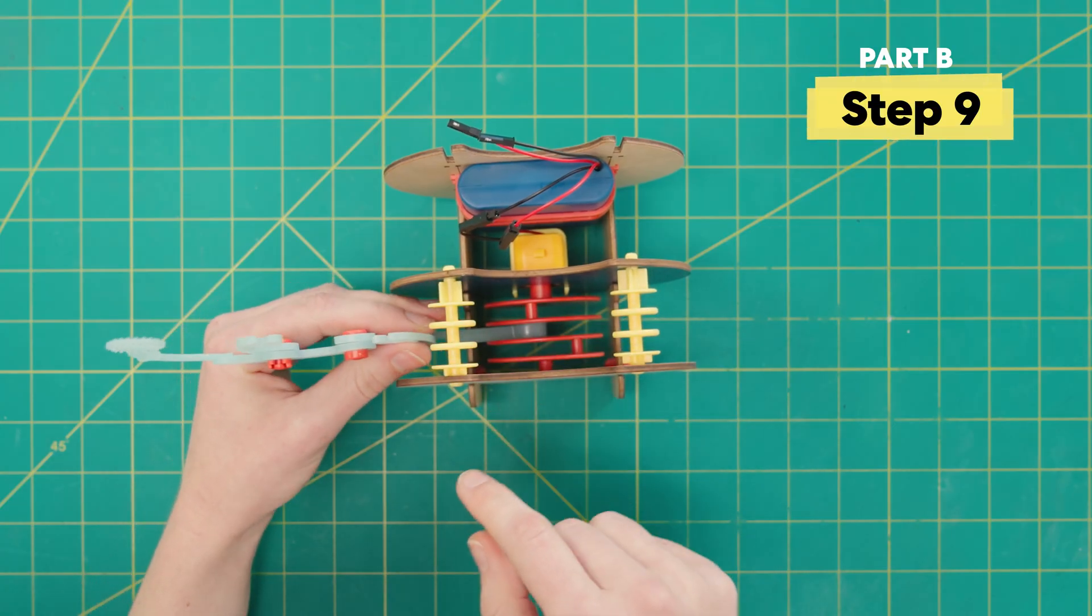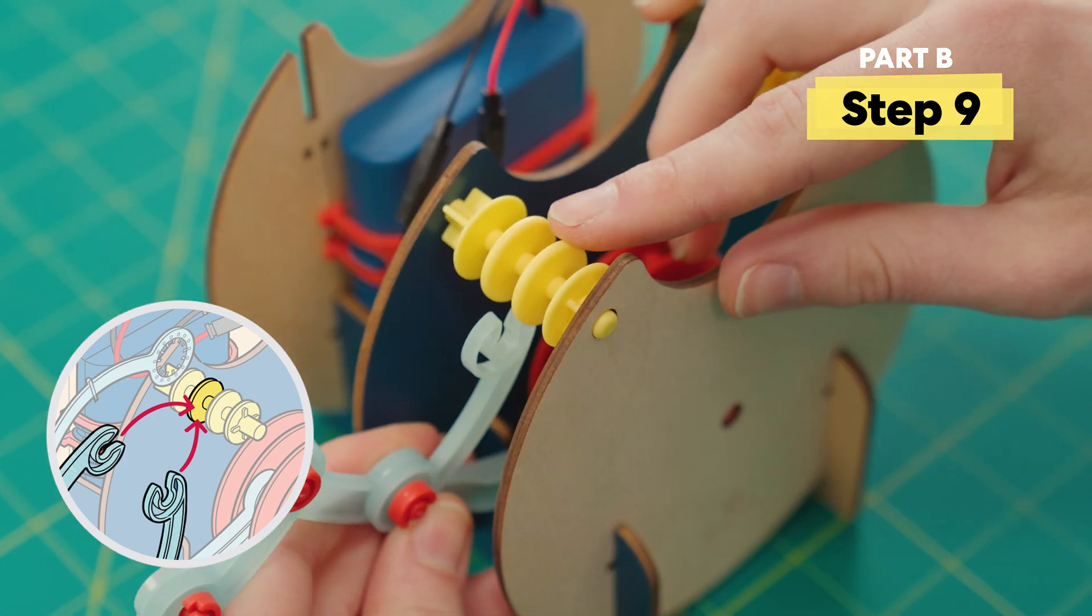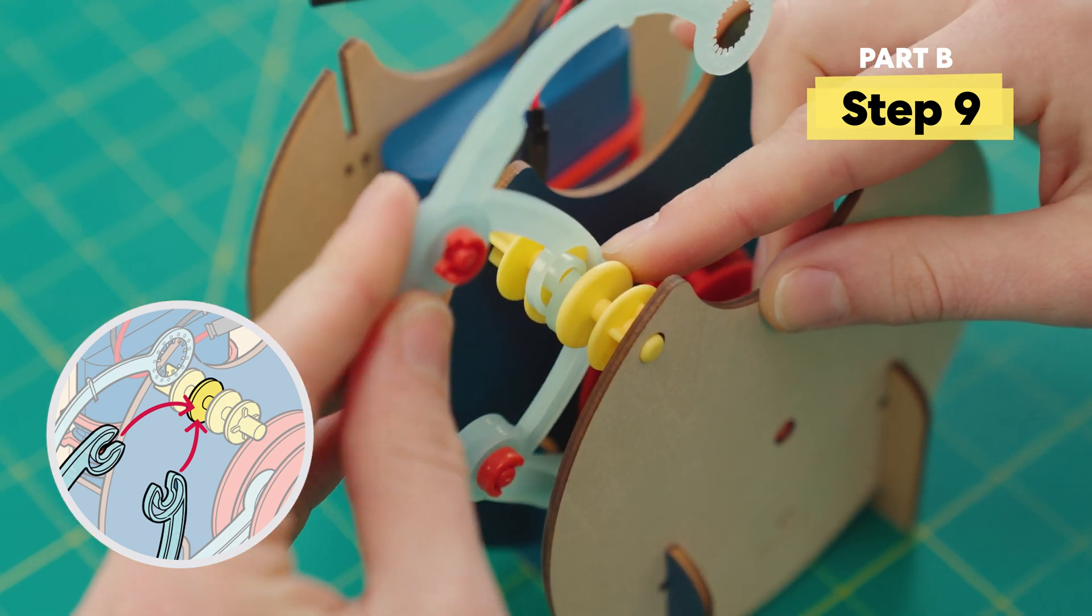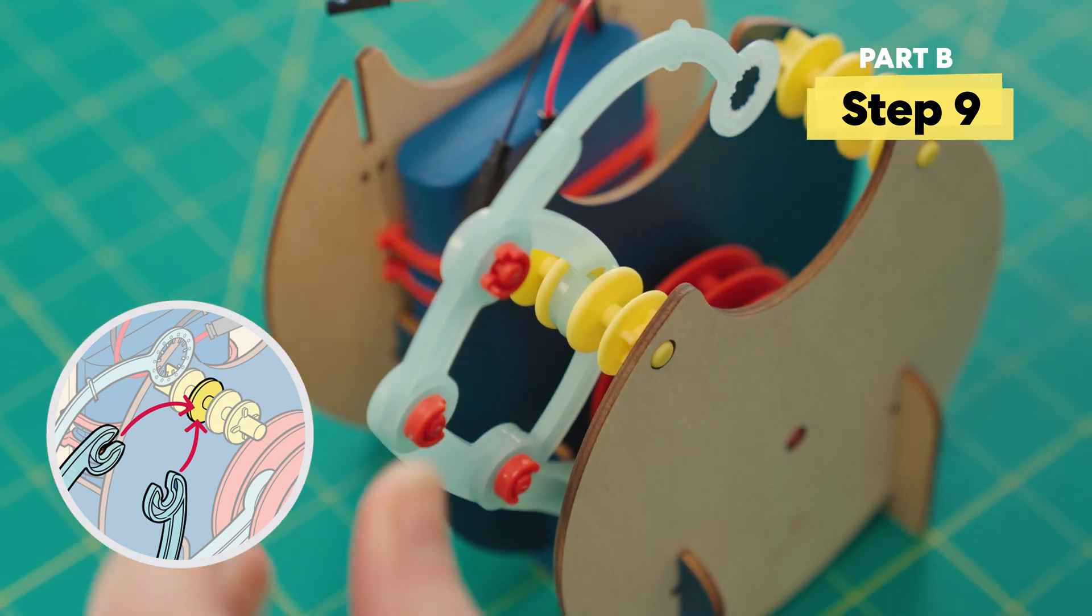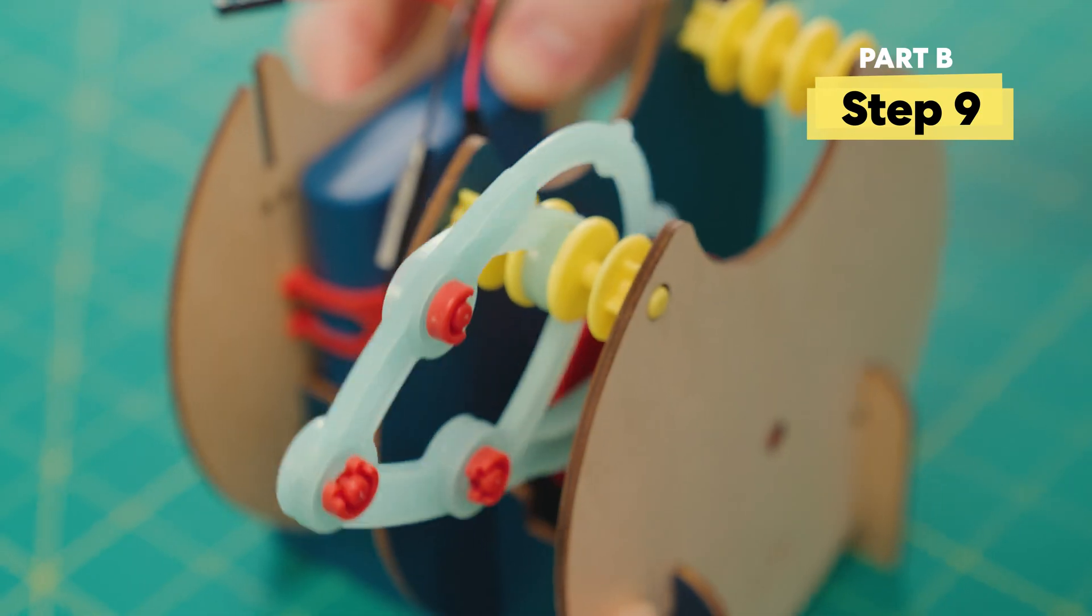Next, we're going to go ahead and attach these two little arms to the yellow spindle. Both these guys will go in the same slot, so put on one and then put on the other. Excellent. If you turn it on and give it a try, it should cycle just like this.